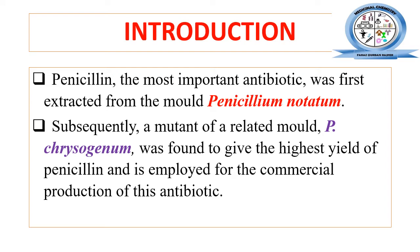Penicillin belongs to the class of naturally occurring antibiotics because it is obtained from a natural source — the fungi mold. There are two major sources for penicillin: one is Penicillium notatum and the second is Penicillium chrysogenum. In earlier days, penicillin was obtained from Penicillium notatum.